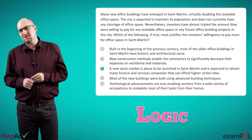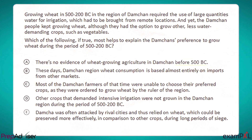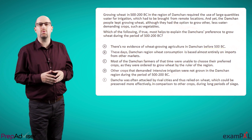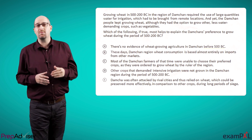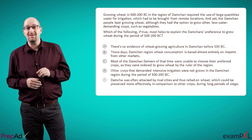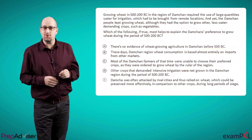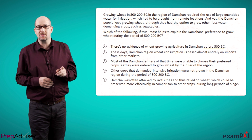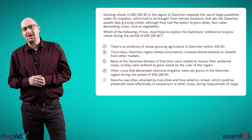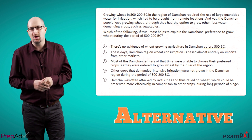Sometimes, though, the question doesn't give us enough to go on, and we'll simply have to, as a matter of last resort, look at the answers. Growing wheat in 500 to 200 BC in the region of Damchan required the use of large quantities of water for irrigation, which had to be brought from remote locations. And yet, the Damchan people kept growing wheat, although they had the option to grow other, less water-demanding crops such as vegetables. Which of the following, if true, most helps to explain the Damchan's preference to grow wheat during the period of 500 to 200 BC? Here, we're being asked to identify a solution for a mysterious phenomenon. This question requires the alternative approach of using the answers.